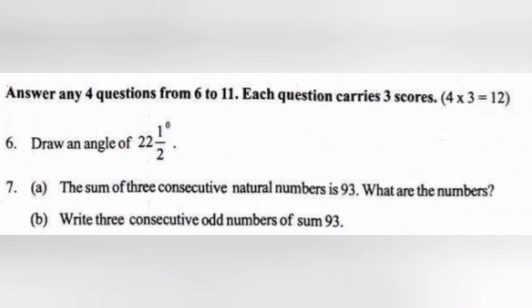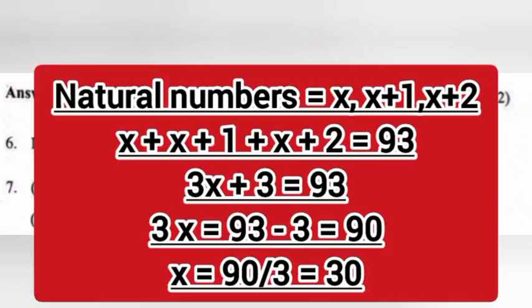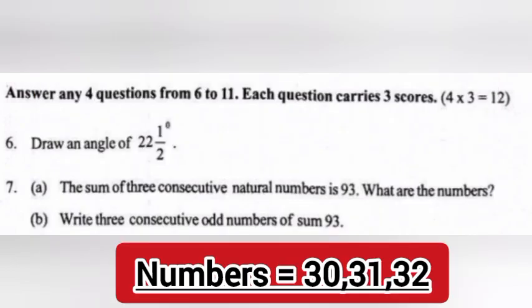7. A. The sum of three consecutive natural numbers is 93. What are the numbers? Answer: Let the natural numbers be X, X plus 1, X plus 2. Then X plus (X plus 1) plus (X plus 2) equals 93. So 3X plus 3 equals 93, giving 3X equals 90, and X equals 30. The numbers are 30, 31, and 32.